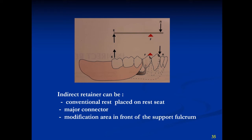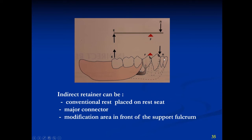In a mandibular distal extension removable partial denture, the movement away from the tissue of the distal extension base is effectively controlled by the indirect retainer placed on the mesio-incisal edge of the canine, preventing the movement away from the tissue of the distal extension saddle. Indirect retention can also be gained from a conventional rest on a rest seat, from a major connector placed in front of the fulcrum, or from any modification area in front of the support fulcrum, which can also act as an indirect retainer.